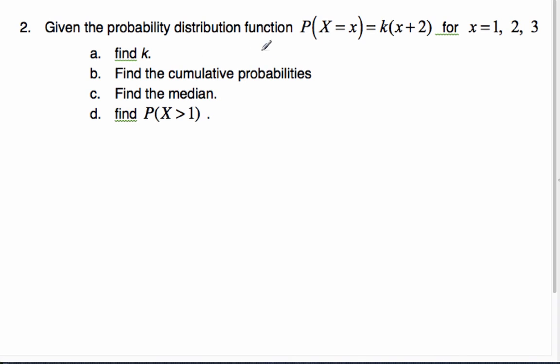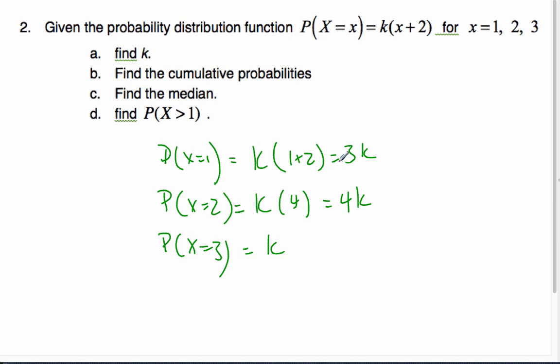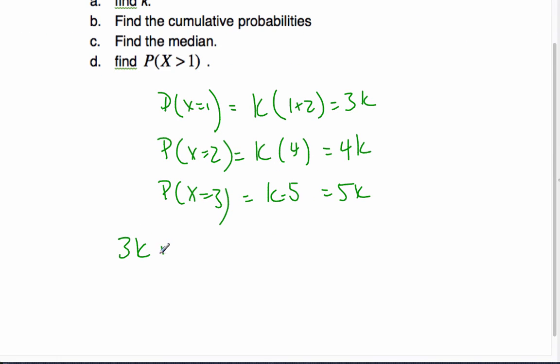Look at another one, find the probability distribution function, or given this probability distribution function, for these values. Find K. Well, I know that x can be any of these values. So, when I find the probability when x is equal to 1, then I get K, 1 plus 2, which is 3K. Well, the probability that x is equal to 2, well, I get K, 2 plus 2 is 4, well, that's 4K. The probability that x is 3, is K, well, 3 times 5 is 5K. And so, these are the only possibilities that exist. And so, what I can say then, I know that 3K plus 4K plus 5K has to be 1. And so, if I do some algebra here, I get K is equal to 1/12.